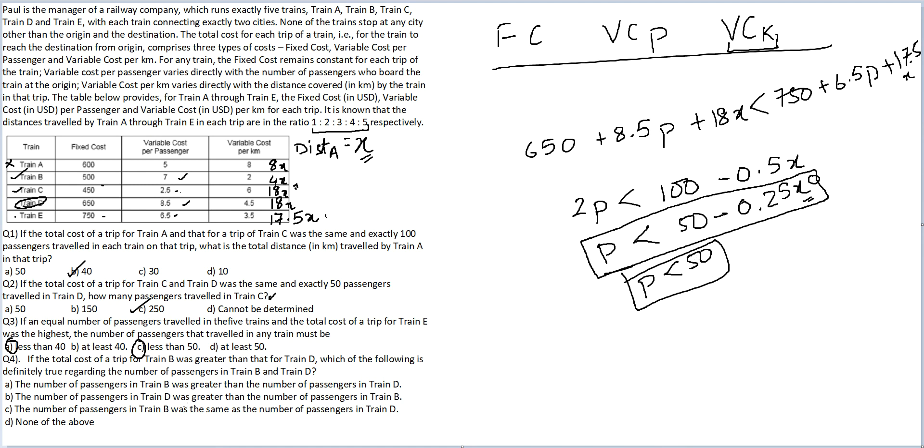Therefore, the number of passengers will clearly be less than 50. And that will ensure that the cost for train E is the maximum. Question number 3 also done. Let's get to question number 4.